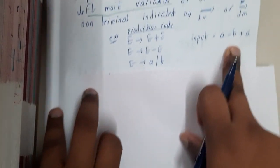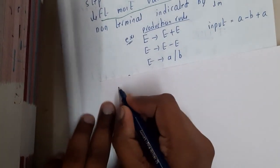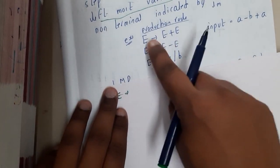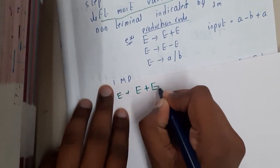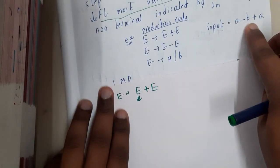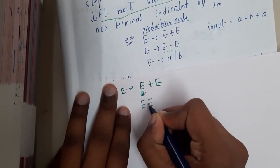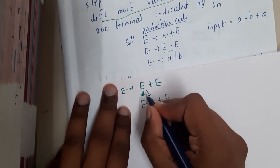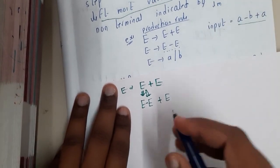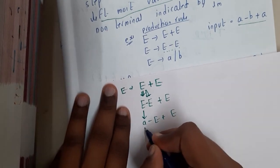The input is 'a minus b plus a' and you need to derive that string. Initially we start with E, then E implies E plus E. As I told you, always expand the left-hand side. We need 'a minus b' on the left, so we expand that part into a minus b format. This whole subject is just about your observation — understanding how we are solving it is the only thing required.